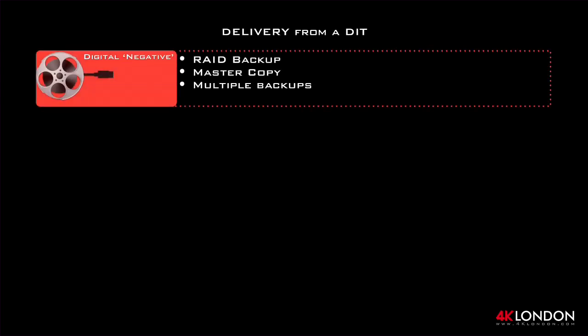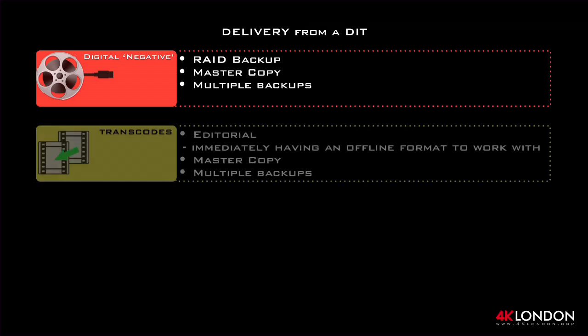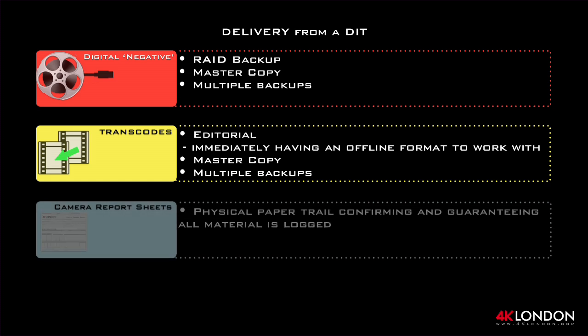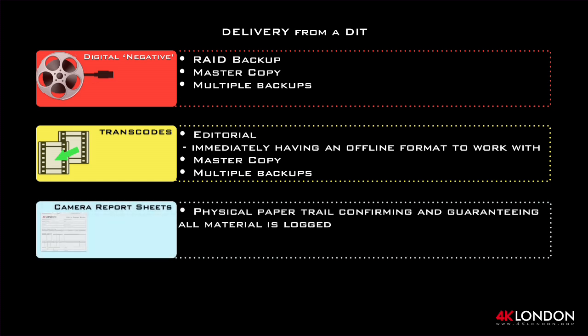At the end of a successful day of shooting, what do you expect the DIT to hand over and to whom? The digital negative will be a physical asset — either an external hard drive, a rated copy, or in some cases an LTO5 tape. These assets will be independently handed over to two separate parties and will be production's responsibility. Transcodes will travel to editorial with the master sound, ready to be used in the edit. Camera report sheets — a copy will travel with each asset that leaves set: a copy to editorial, a copy to production, and a copy that will remain on set with the DIT.